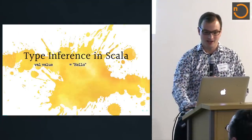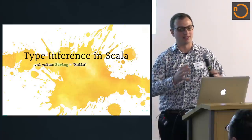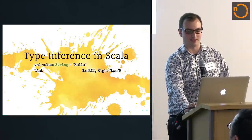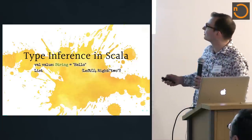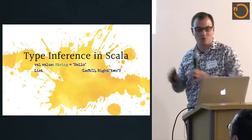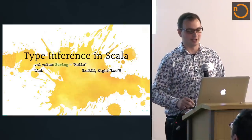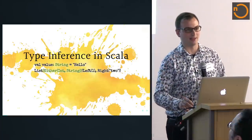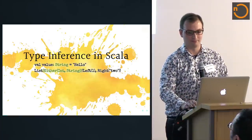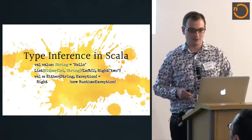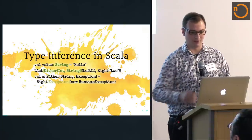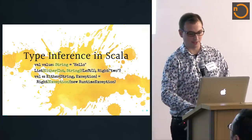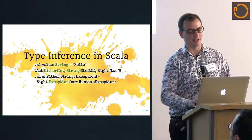If we write `val value = "hello"`, type inference will automatically put in effectively a colon-string there — it knows that's a string. If we write a list with a gap, the type inference is able to work out that this is actually an Either, even though we don't anywhere mention Either in the values we apply to that list factory. Similarly, the compiler can work out that this is an Exception even though we've only mentioned a subclass of it, inferring from the return type we specified.